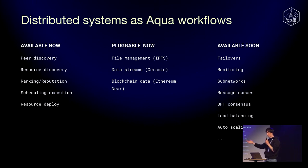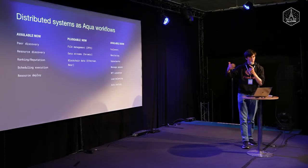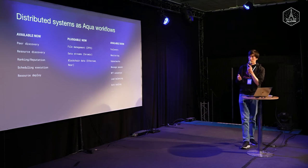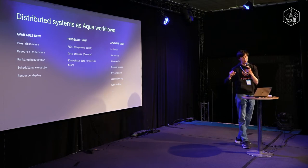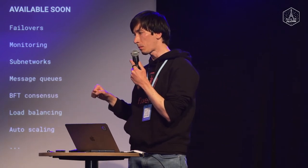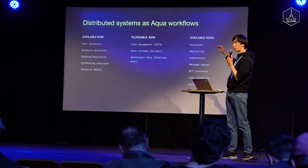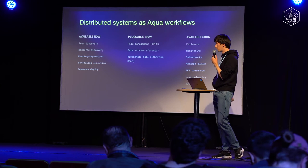Besides the pure Marine runtime and Aqua language, right now when you build on the stack you can connect to peers, discover peers, connect to them, discover resources — which Marine functions are deployed where — deploy functions, call functions, and schedule execution of those functions across the network. There's also a TrustGraph which allows you to score and select nodes based on a score. Plugins to external data layers like IPFS, Ceramic, and on-chain blockchains are also available now.